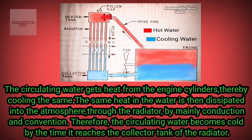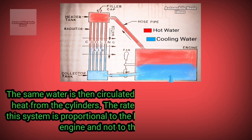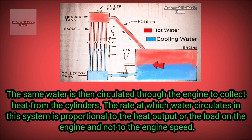The same heat in the water is then dissipated into the atmosphere through the radiator by mainly conduction and convection. Therefore, the circulating water becomes cold by the time it reaches the collector tank of the radiator. The same water is then circulated through the engine to collect heat from the cylinders.